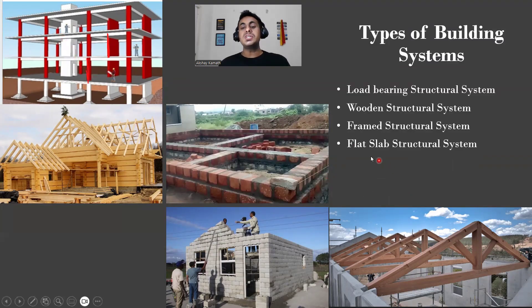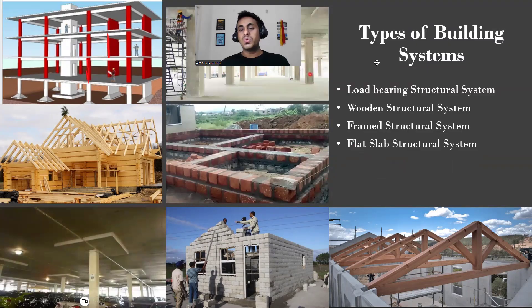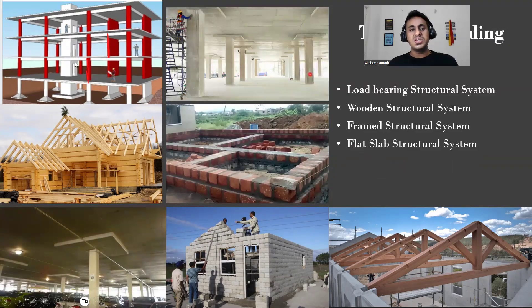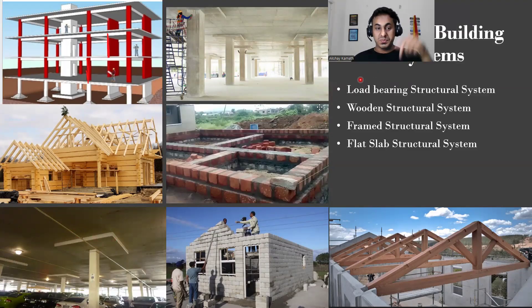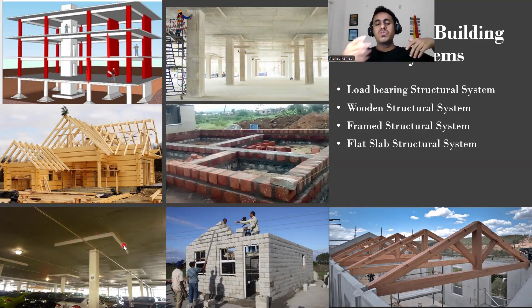Next is the flat slab structural system. In a flat slab there is no visible beam. What you have is a column attached to a drop panel, and then the slab. This is normally used in malls, basement parking areas, and some metro stations — places where you want a larger span. In a normal frame structure, column-to-column distance is typically 3 to 6 meters.